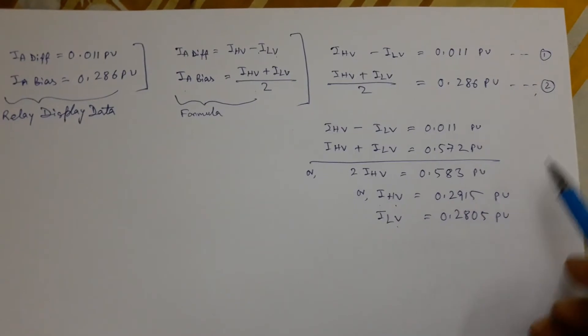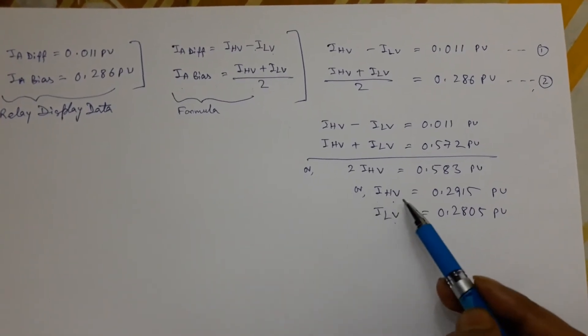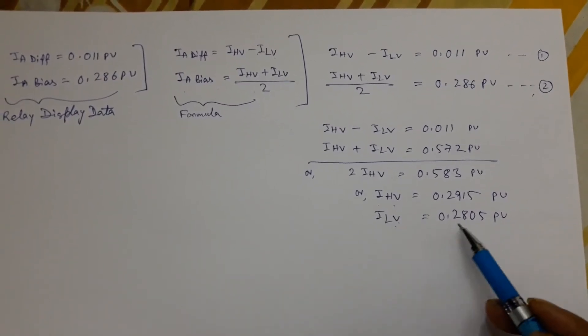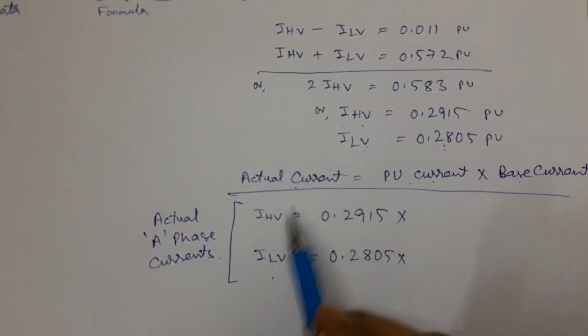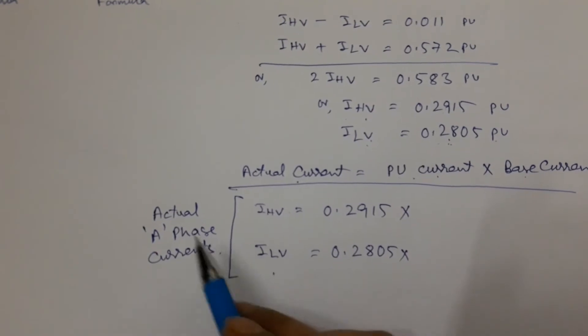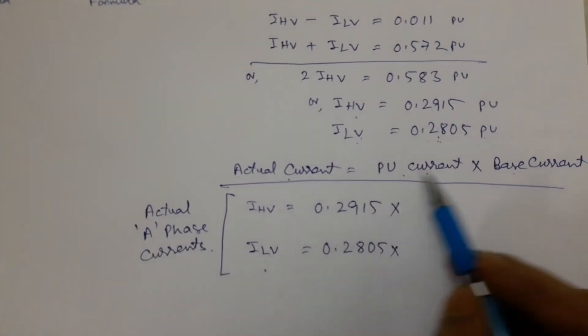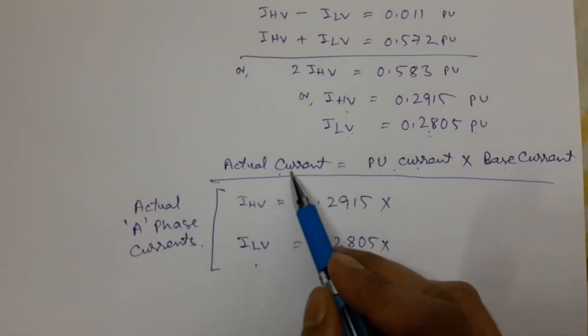By using these two formulas, we can easily find value of HV and LV side currents in per unit. Now we can calculate actual value of HV and LV side currents of A phase by using this formula. Actual current can be obtained by multiplying per unit current with base current.